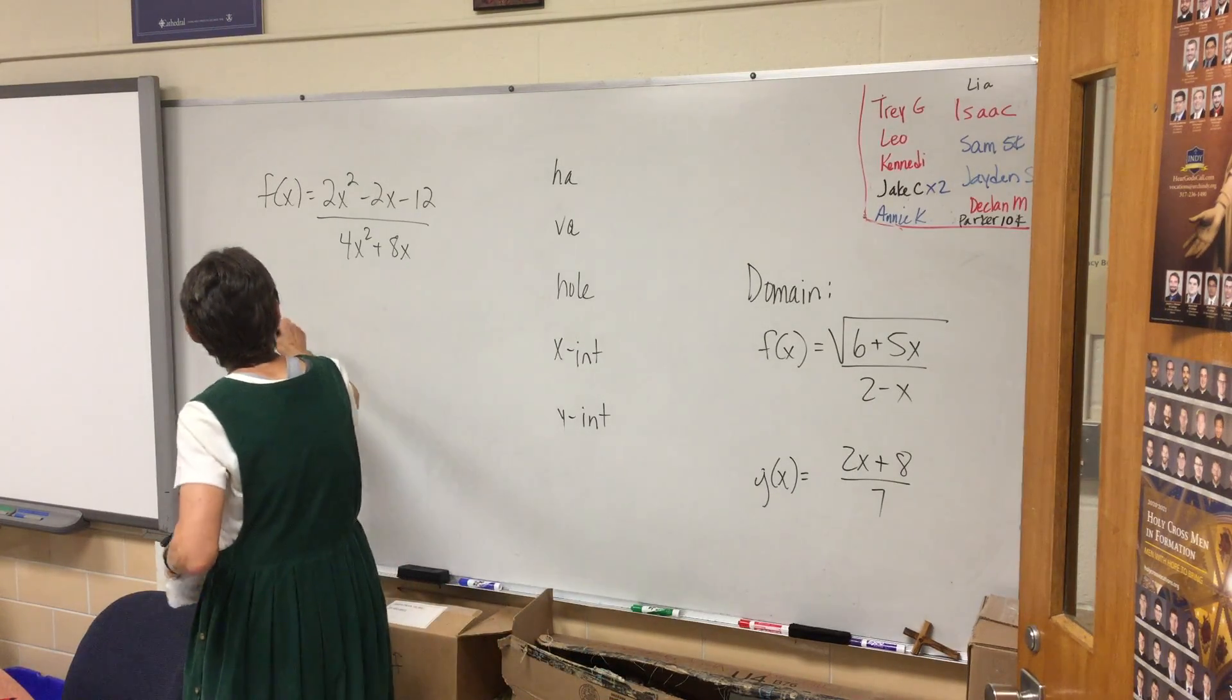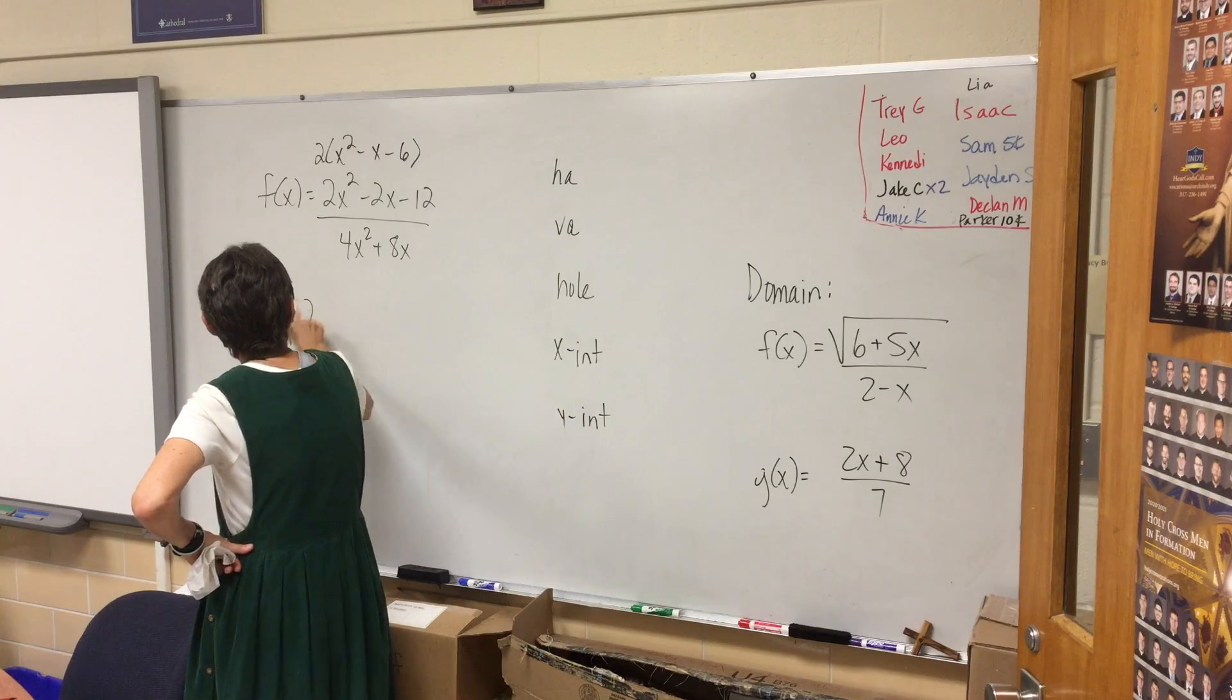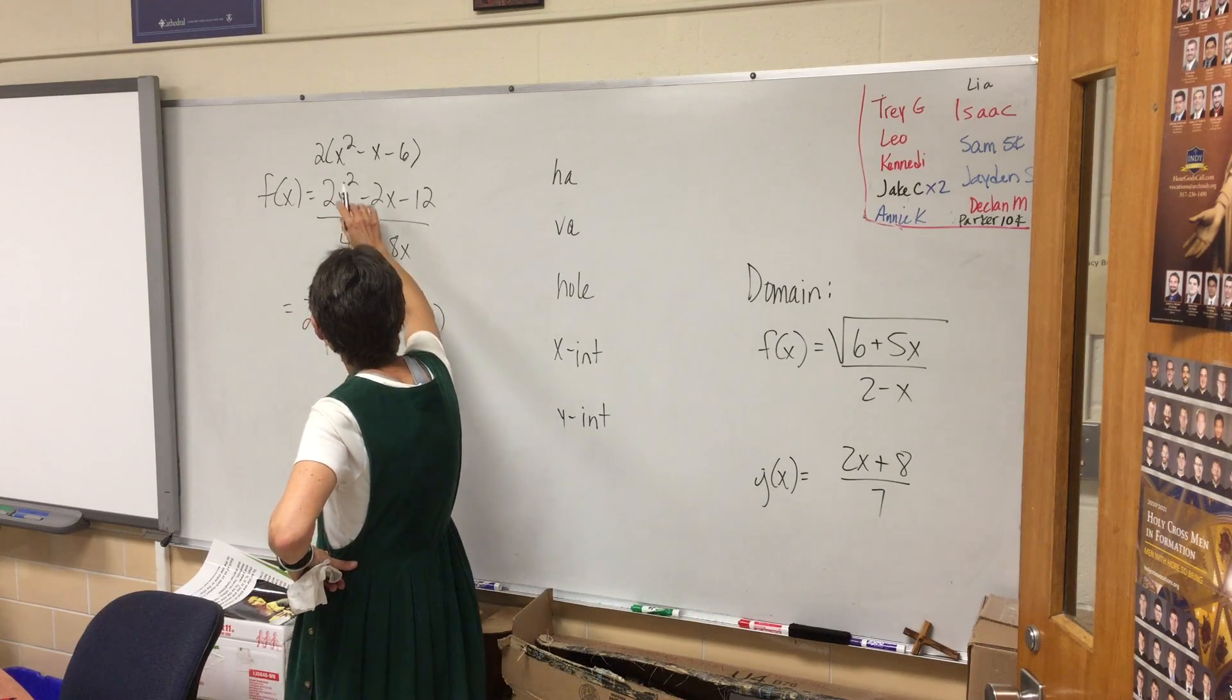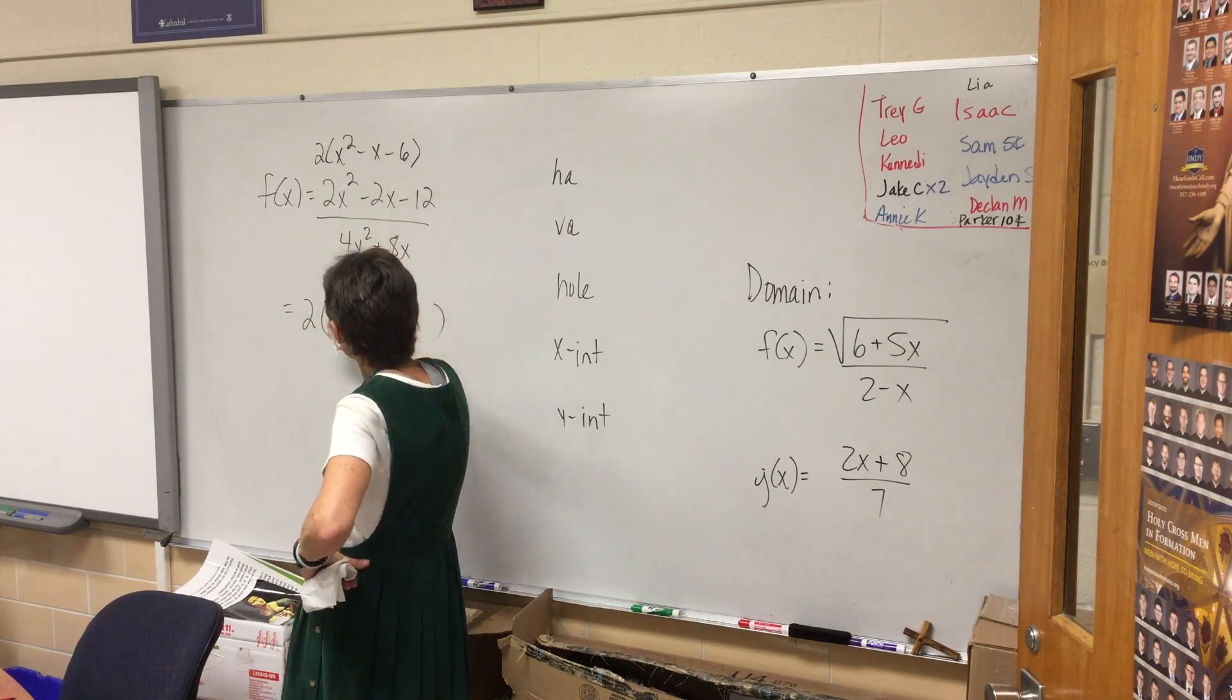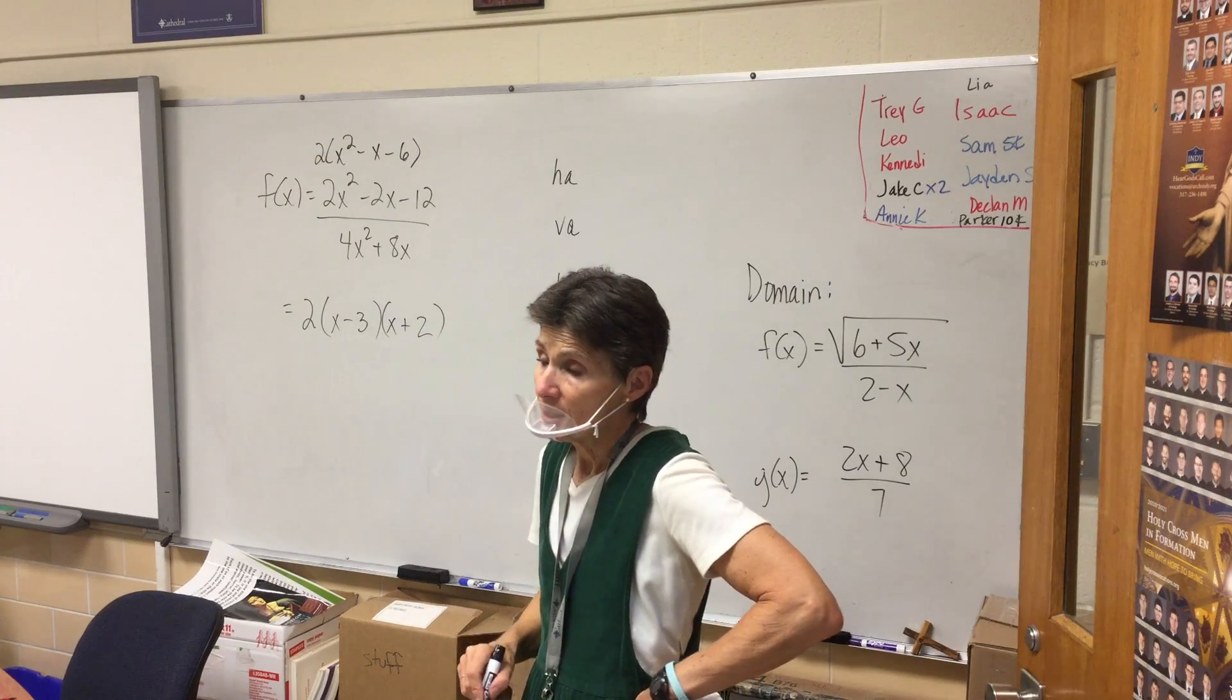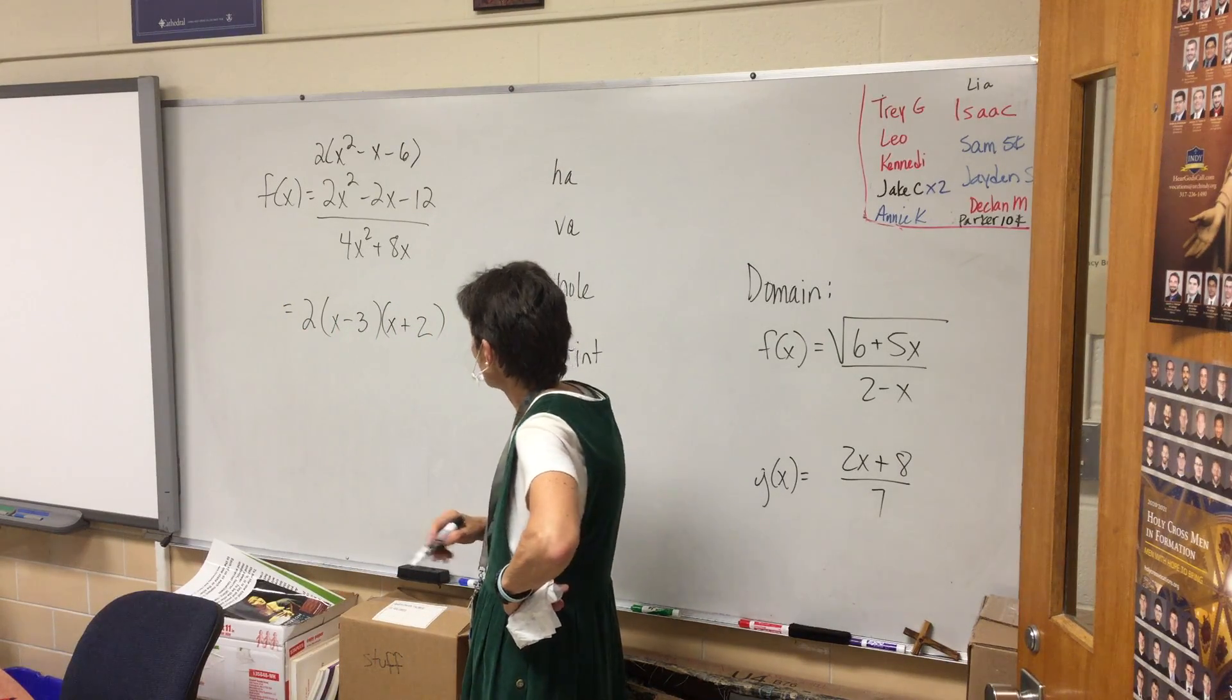So what do we do? How do we start? We're going to start by factoring everything. It looks like on the top I can take out a two. What's that going to leave me with? I'm going to factor this carefully and correctly. I pull my two out, I have to keep the two. How does that factor? Minus three plus two. If I'm not sure, I am going to FOIL it back together and make sure that it is correct.